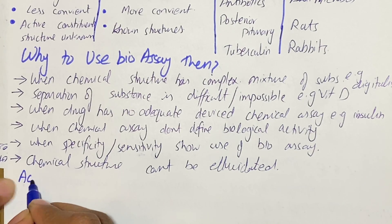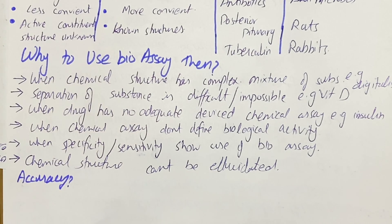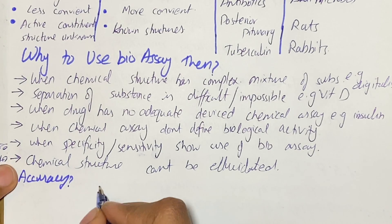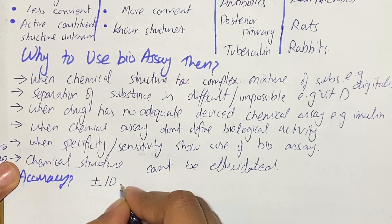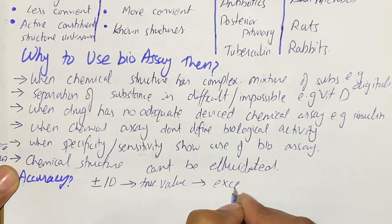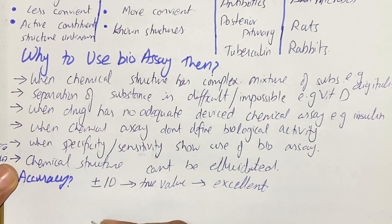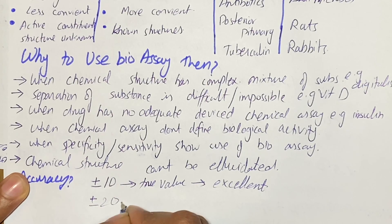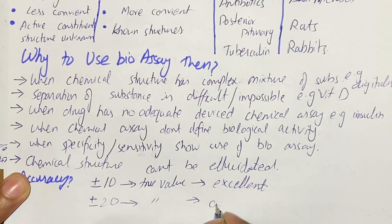The accuracy of bio assay is determined from the country's own pharmacopoeia. For example, if you are living in Pakistan, you use the Pakistan Pharmacopoeia; if you are in the US, you use the United States Pharmacopoeia (USP). According to that, you determine if your results are acceptable. If your results deviate by plus or minus 10 from the true value, your results are considered good. If deviation is within plus or minus 20 from the true value, your results are also considered acceptable.